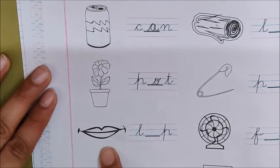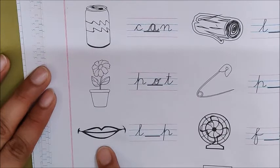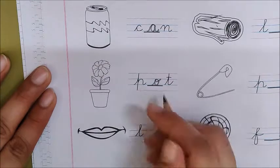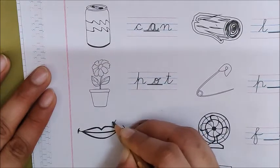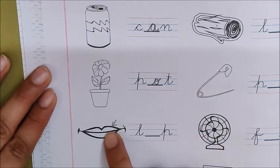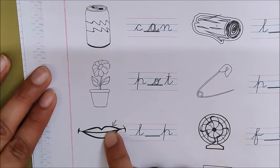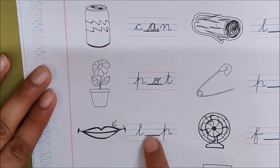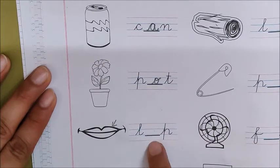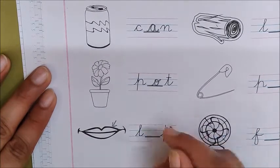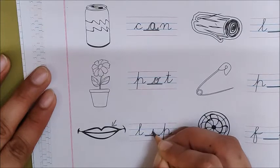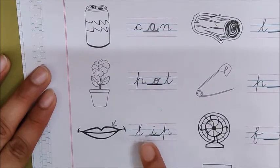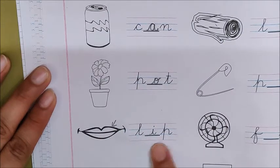Next picture. What is this? Look. Come on. Tell me. What is this? Lip. Tell me the sounds in the word lip. L. What will come here, children? I. Very good. I. L-i-p lip.